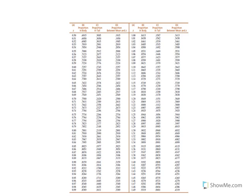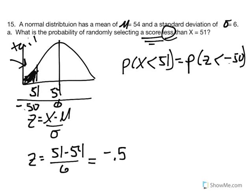The area in the tail is 0.3085. So the value from our unit normal table is 0.3085, meaning there's a 30.85% chance that if we selected a score from this distribution, that score would be less than 51.